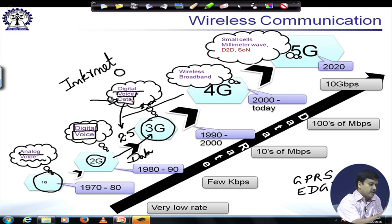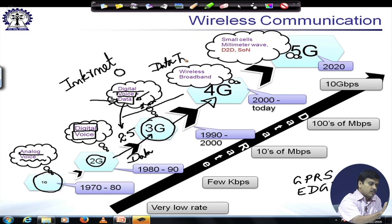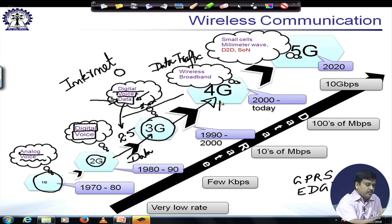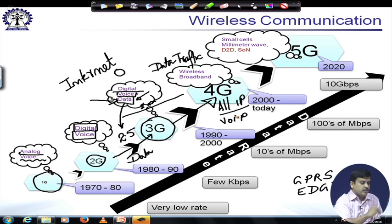There was more and more demand for data-centric services. Because of this, when things moved on to the 4th generation mobile communication system, it became fundamentally data-traffic oriented — all IP. It was primarily designed for data, and voice could be carried as Voice over IP, also known as VoIP.